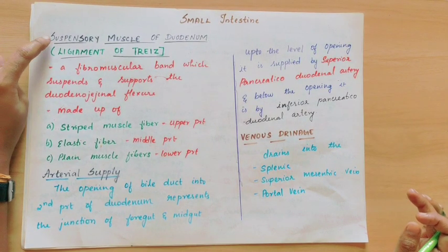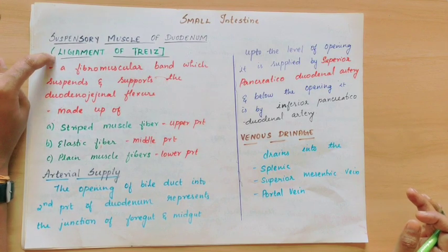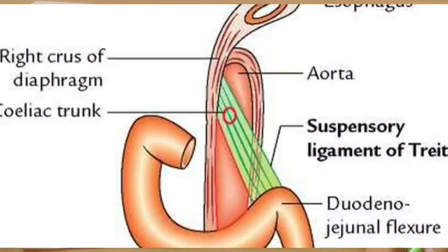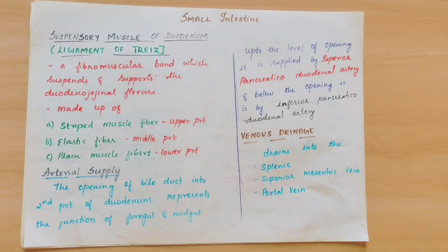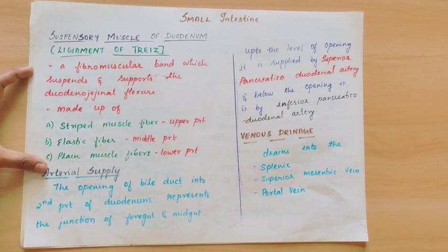First, coming to the suspensory muscle of duodenum, otherwise known as ligament of Treitz. This is an important structure. This is a fibromuscular band. The suspensory muscle of duodenum, otherwise ligament of Treitz, is a fibromuscular band. We will talk about three parts: upper part, middle part, and lower part.